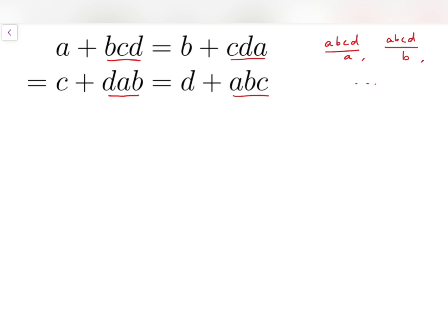So then, I'm going to rewrite this equation into A plus ABCD over A equals B plus ABCD over B, and so on.